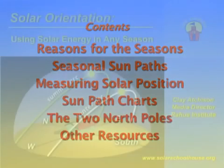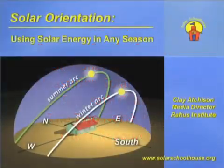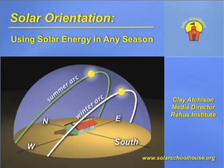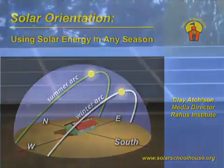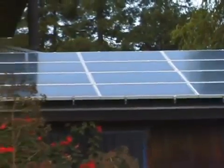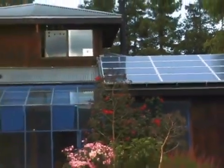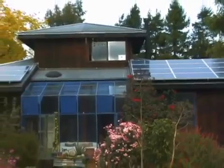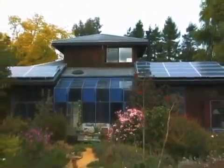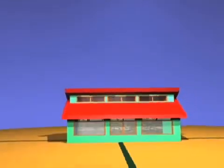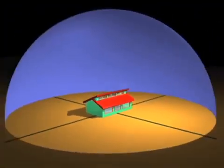Solar orientation is basically the process of aiming something at the sun. This is important because any solar technology, like a solar panel, a sun oven, or even a passive solar home, receives the greatest amount of energy when pointed or oriented at a direct 90-degree angle toward the sun. This isn't as easy as you might think, however, because the sun's position in the sky is constantly moving.